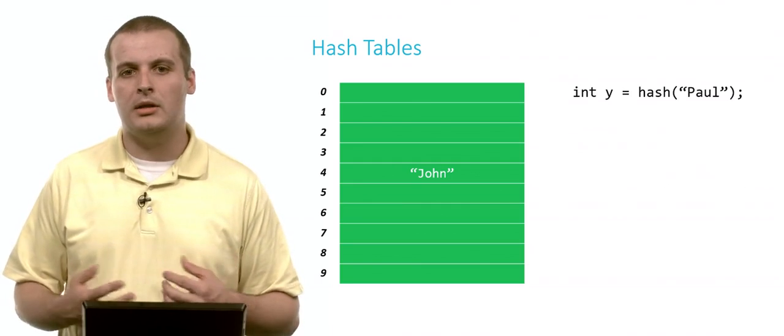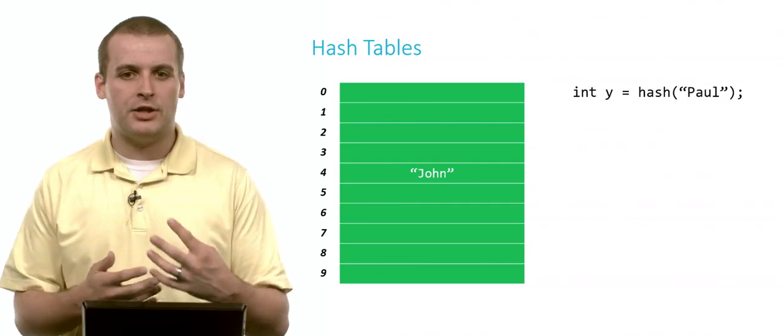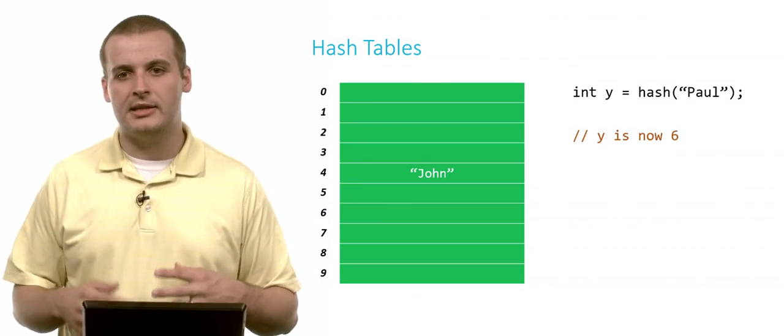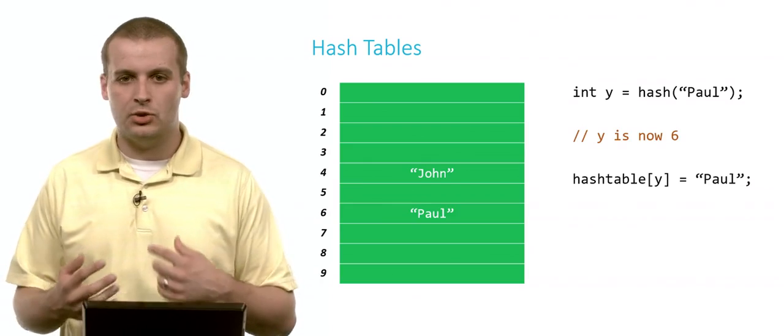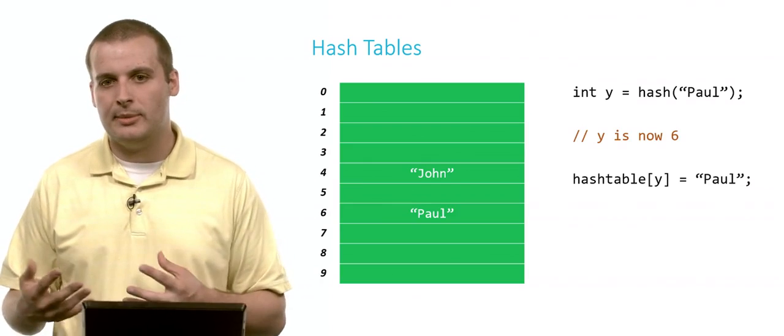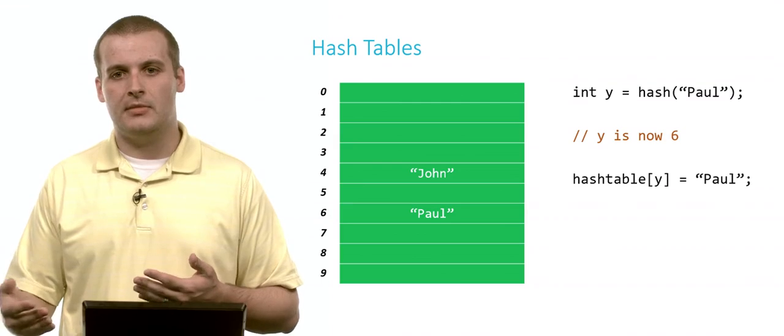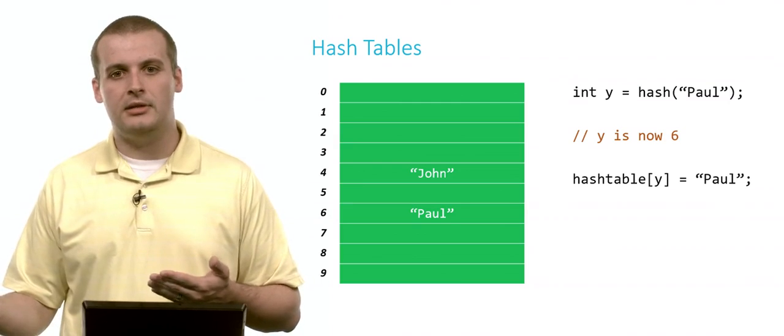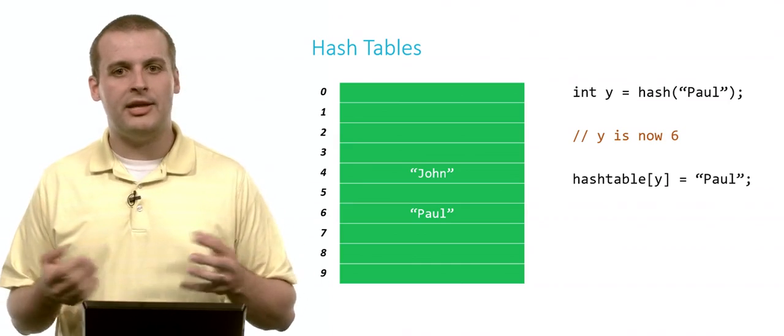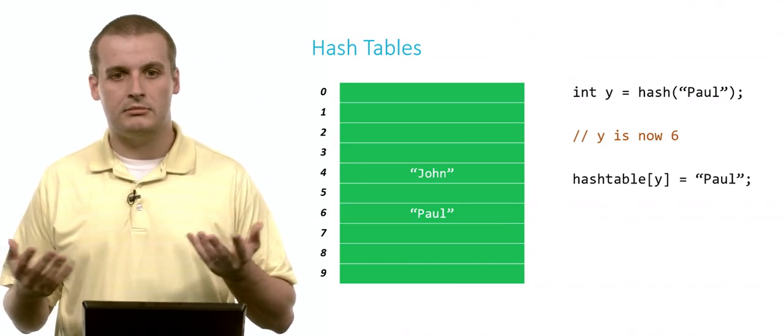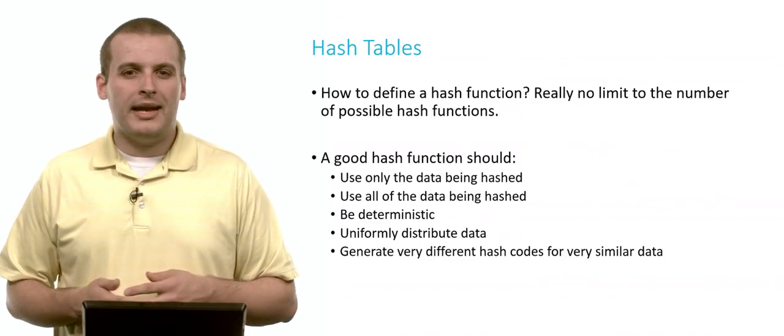Let's say we now want to hash Paul. This time we run Paul through the hash function, and the hash code that is generated is 6. Now we can put Paul in array location 6. And if we need to look up whether Paul is in this hash table, all we need to do is run Paul through the hash function again, we're going to get 6 out again, and then we just look at array location 6. Is Paul there? If so, he's in the hash table. Is Paul not there? He's not in the hash table.